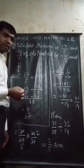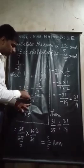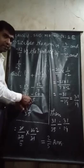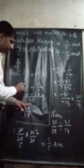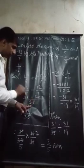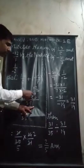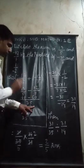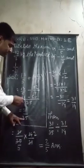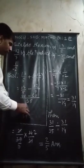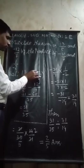We get LCM of 5 and 7, which is 35. Then LCM is divided by the denominator. 35 divided by 5 is 7, and 7 will be multiplied by numerator 13. 13 times 7 equals 91. Again, 35 divided by 7 is 5, and 5 will be multiplied by 12. 12 times 5 equals 60. After that, 91 minus 60 equals 31 upon 35. So 31 upon 35 is the sum of 13 upon 5 and minus 12 upon 7.